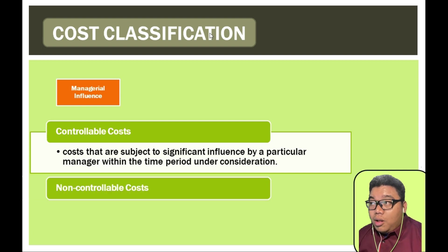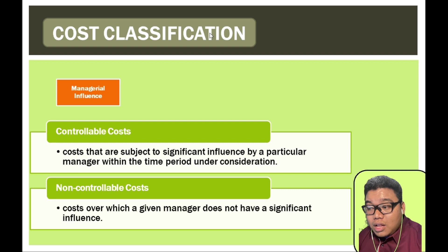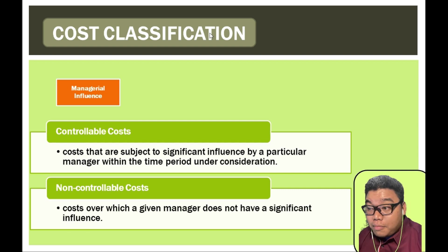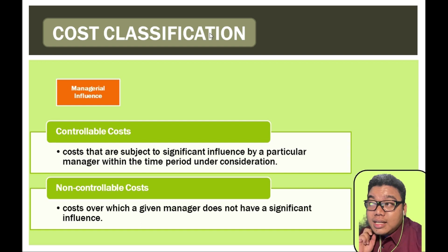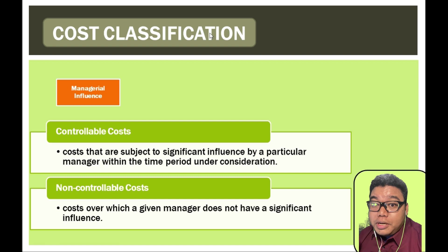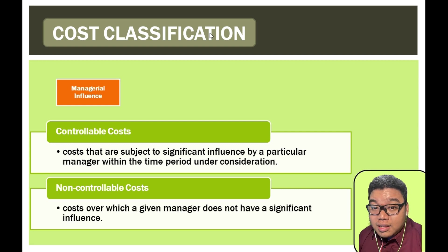Non-controllable costs are costs attributable to a department where the manager or person in charge has no direct influence over the cost. An example is depreciation of equipment — the manager of the department where the equipment is used cannot control the depreciation.